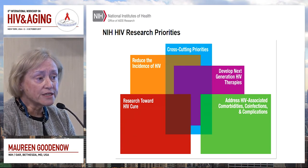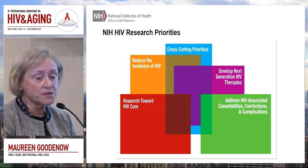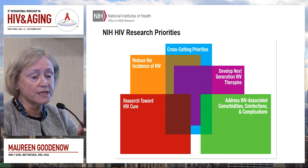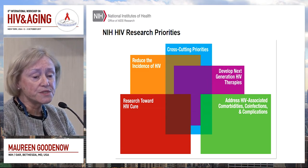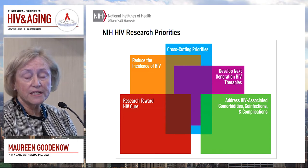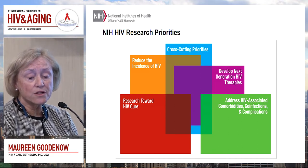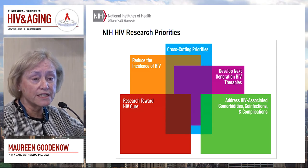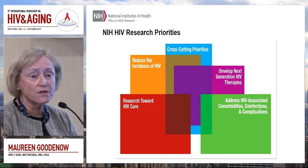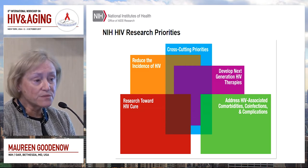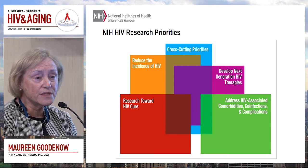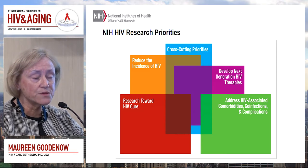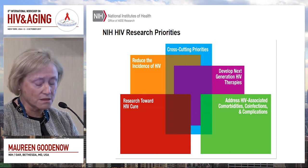To prioritize the distribution and investment of these resources, in 2015 there was a re-articulation of the NIH HIV research priorities. These include reducing the incidence of HIV, developing next-generation therapies, addressing HIV-associated comorbidities, co-infections and complications, and research towards a cure. Overarching and cross-cutting across all of these are priorities that include basic research, implementation science, information dissemination, and behavioral and social science research, because many of those activities go across all of the priorities.